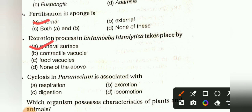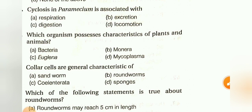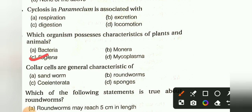Cyclosis in Paramecium is associated with: respiration, excretion, digestion, or locomotion. The answer is locomotion. Which organism possesses characteristics of both plant and animal? Bacteria, Monera, Euglena, or Mycoplasma. The answer is Euglena.